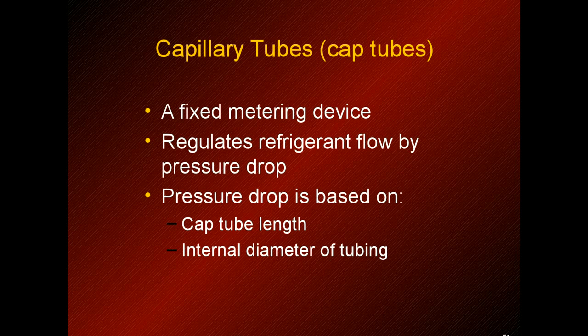The capillary tube falls in the category of a fixed metering device, and like all metering devices, it regulates refrigerant flow by dropping the pressure. Unlike a fixed orifice or a TXV, that pressure drop is determined by the length of the cap tube and the diameter of the cap tube.